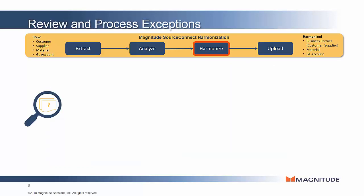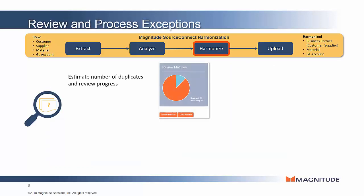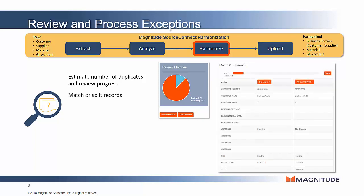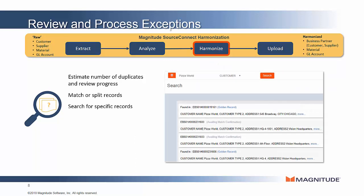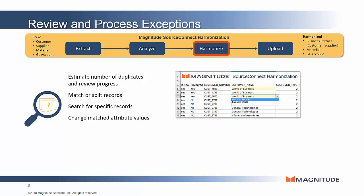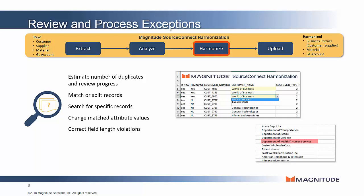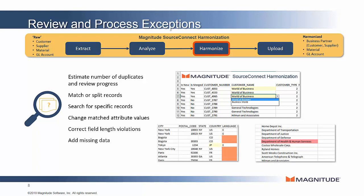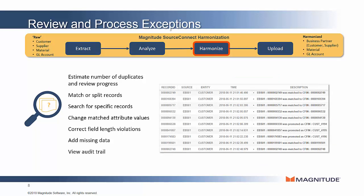For the records left in the human review window, SourceConnect includes an interface for data stewards to visually compare these records and determine whether they match or don't match. It's also possible to search the repository for specific records. The data can also be exported to an Excel template where several updates can be made — for example, overriding source priorities, adjusting values to fit within field length requirements, adding missing required values, or enriching the data in any other way. Once these changes are made to the Excel template, it can be re-uploaded into the repository where it's audit tracked.